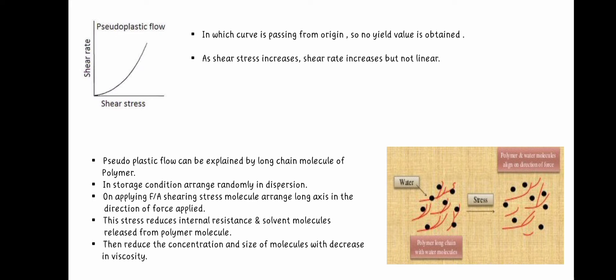Pseudoplastic flow can be explained by long chain molecule of polymer as shown in the figure. In storage condition, arranged randomly in dispersion. On applying shearing stress, molecule arranged long axis in the direction of force applied. This stress reduce internal resistance and solvent molecules released from polymer molecule. They reduce the concentration and size of molecules with decrease in viscosity.